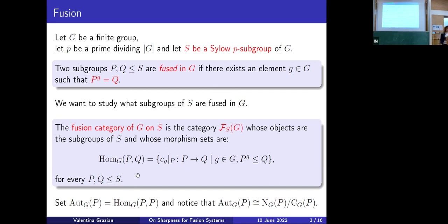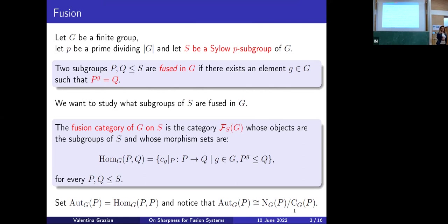Now if we replace Q by P, so we consider morphisms from P to itself, this set is actually a group under composition. And if you think about it, the conjugations that map P to itself are exactly those whose elements are in the normalizer N_G(P). So this group Hom_G(P,P) is actually isomorphic, as a group, to the quotient of the normalizer N_G(P) over the centralizer C_G(P), because if you use an element in the centralizer, your conjugation is just the identity.